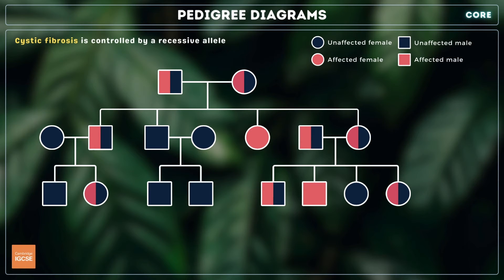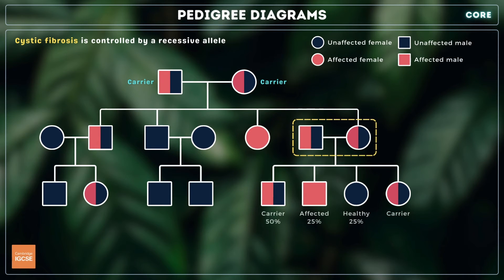For example, cystic fibrosis is coded for by a recessive allele. Therefore, if an individual inherits the condition, we can be sure that both their parents — provided they don't also have the disease — are carriers. A carrier may be depicted by a half-shaded symbol. If two carriers mate, the chances that their child will inherit the disease is 25%, which could influence whether or not they decide to have children together.